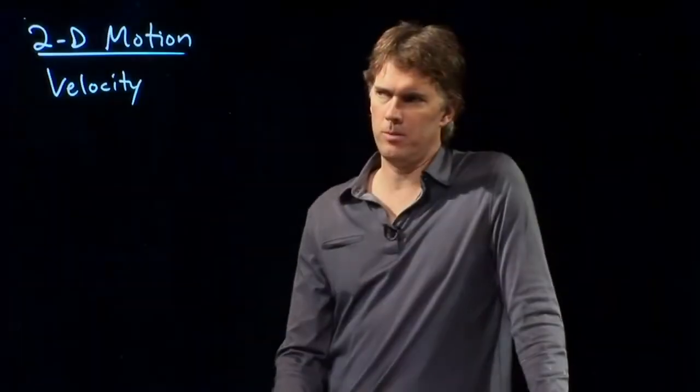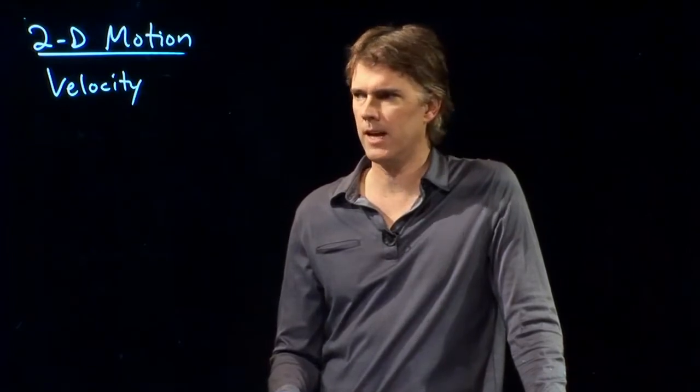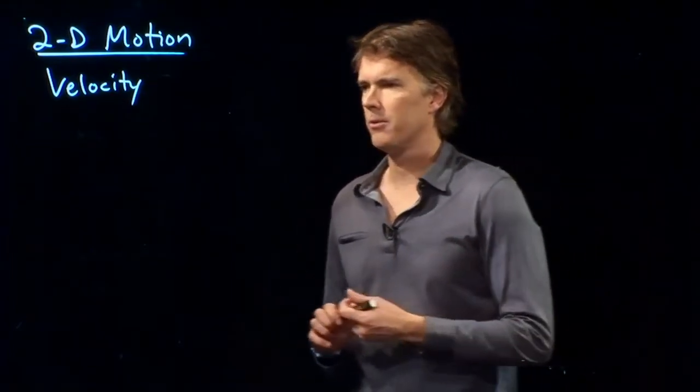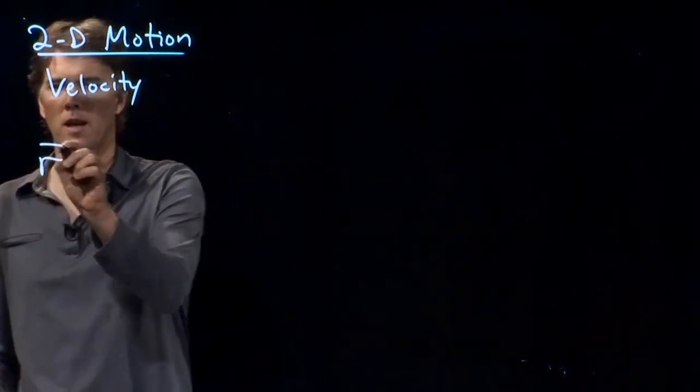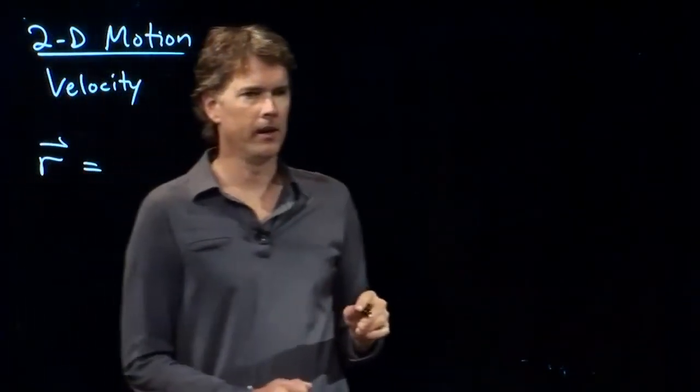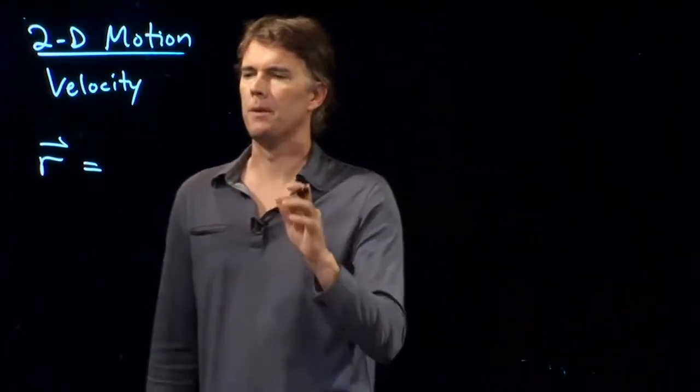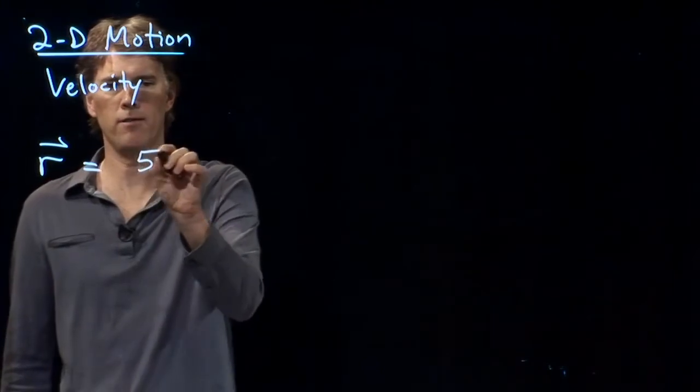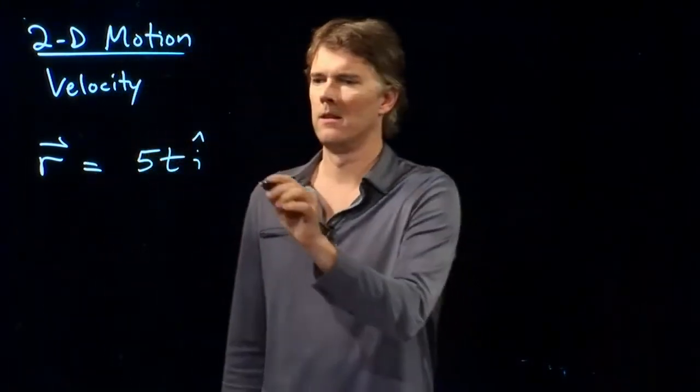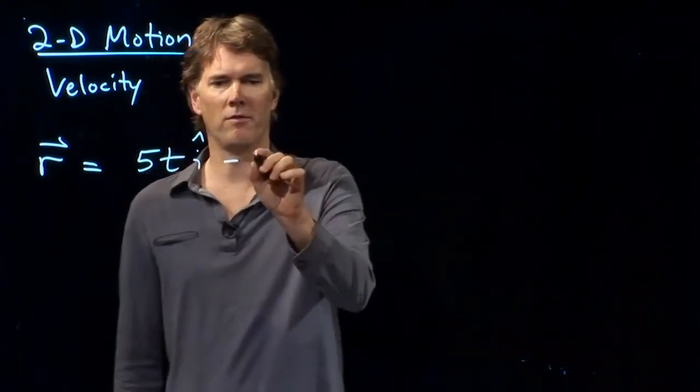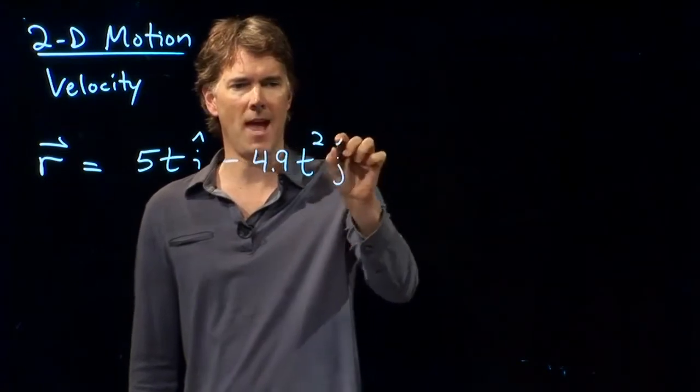Hello class, Professor Anderson here. Let's talk a little bit about calculating velocity in two dimensions. And let's say we have the following. Let's say we are given the position vector. And the position vector r is going to look like something. Let's just make something up. Let's say that it is 5t i-hat minus 4.9t squared j-hat.